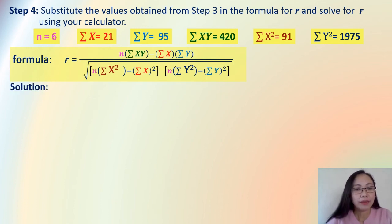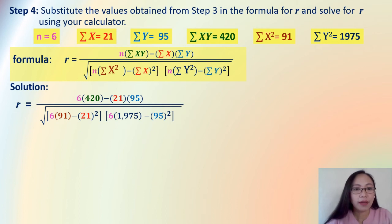And we will now do our solution. So, first we have to substitute the values in the formula. N is 6. Summation of XY is 420. There you go. Summation of X is 21 here. Summation of Y is 95. And then, N here, 6. Summation of X squared, you have there 91. And then, summation of X is 21. And we square it. And then, again, N is 6. Summation of Y squared is 1,975. And summation of Y, which is 95. And we square that value.